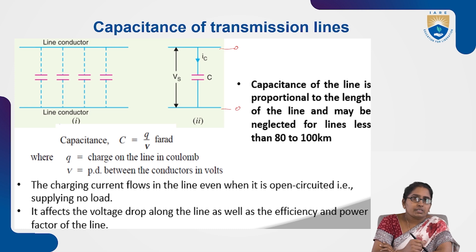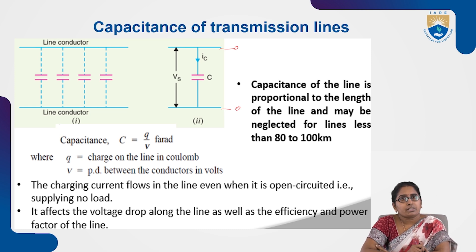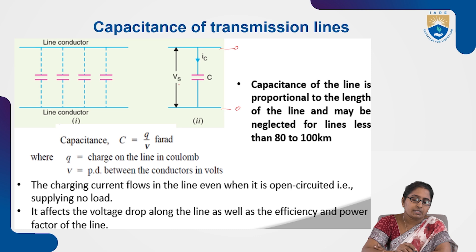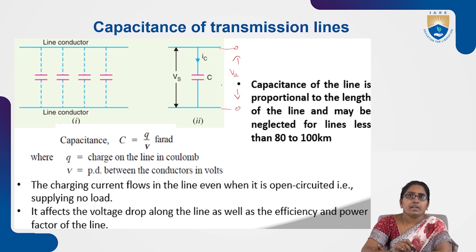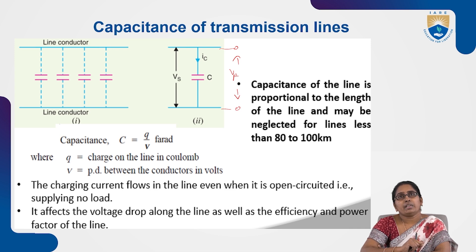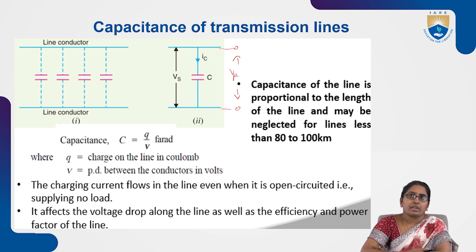Due to this charging current flowing because of the capacitance, there will be some voltage drop between the sending end voltage Vs and the receiving side. This will also affect the efficiency of the transmission line and the power factor of the line. This is how capacitance affects the performance of the transmission line.